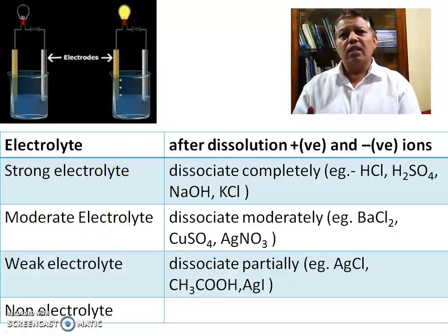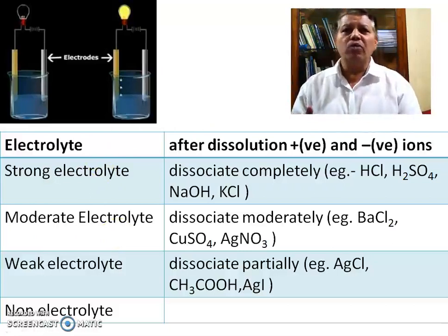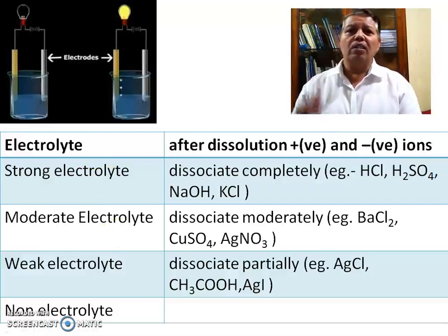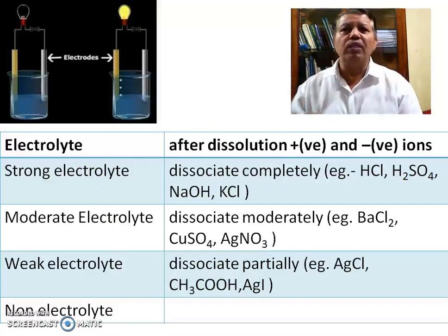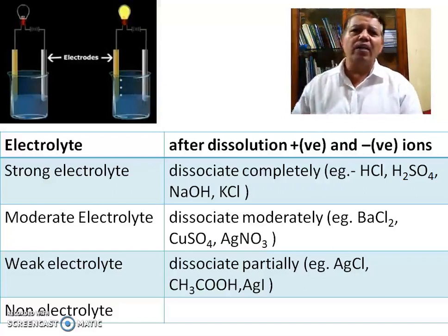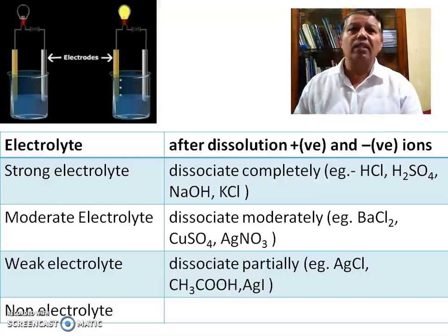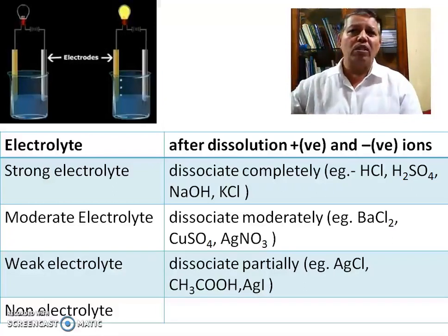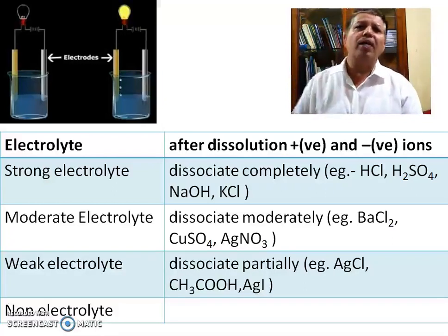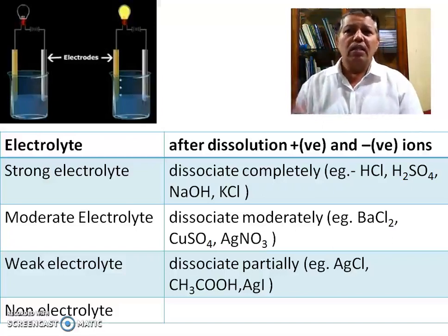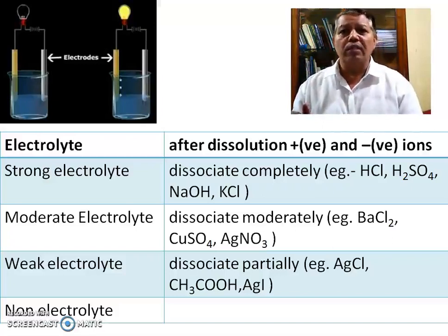In case of the strong electrolyte, ionic compounds when dissolved in water completely ionize. For example, NaOH, HCl, H2SO4, KCl, and NaCl — when they dissolve in water, they completely ionize. Therefore, these types of electrolytes are called strong electrolytes.